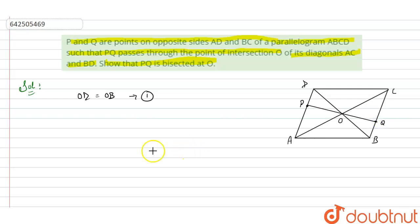We have to prove that PQ bisected at O. So, to prove is OP is equals to OQ. This we have to prove. Now, let's start with a proof.